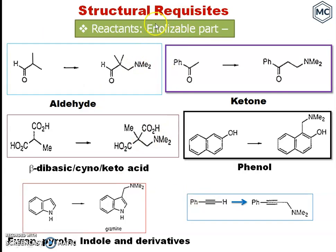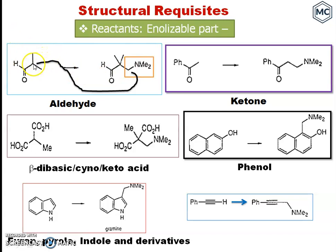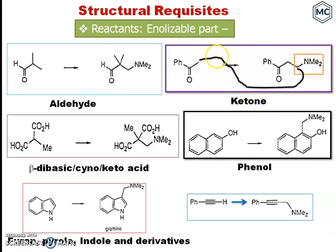Next, we consider the ionizable substrate. First case: an aldehyde. If you use an aldehyde with a mixture of secondary amine, you get this compound. The product will contain additionally a -CH₂NMe₂ group, and this -CH₂NMe₂ forms a bond with the ionizable carbon. If you use a ketone, this is the ionizable carbon; it forms a bond with the iminium salt and a -CH₂NMe₂ group is added.